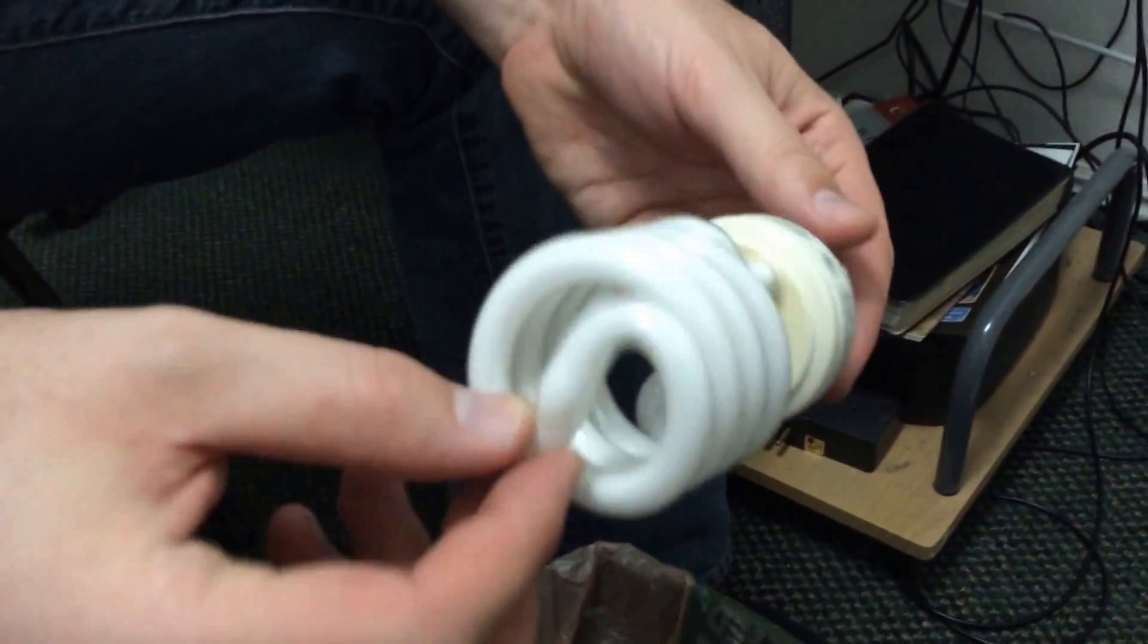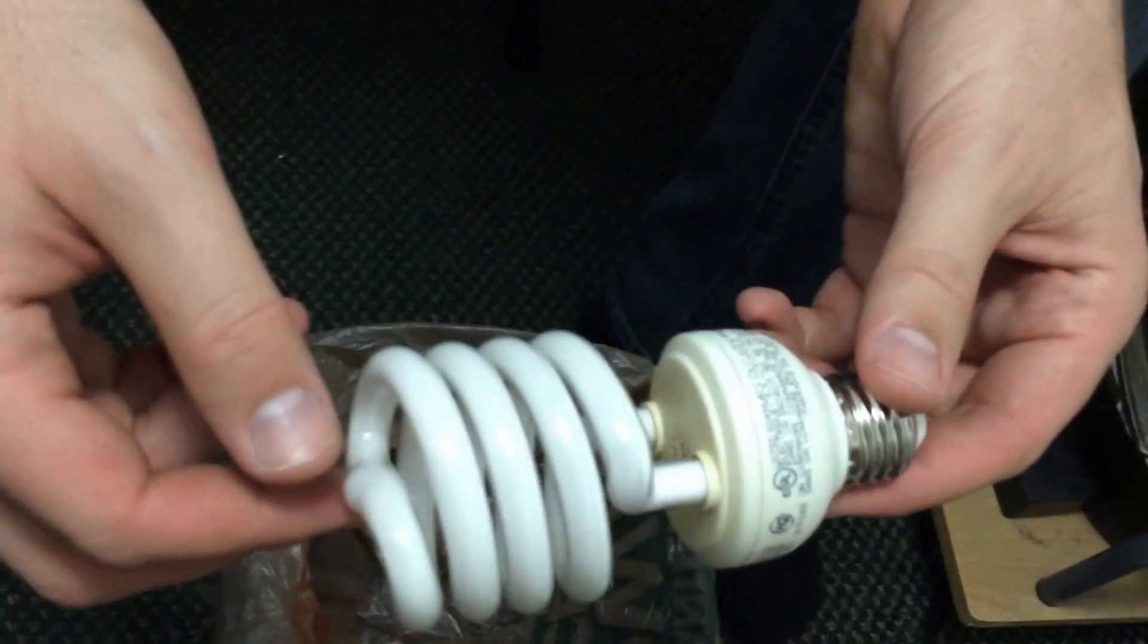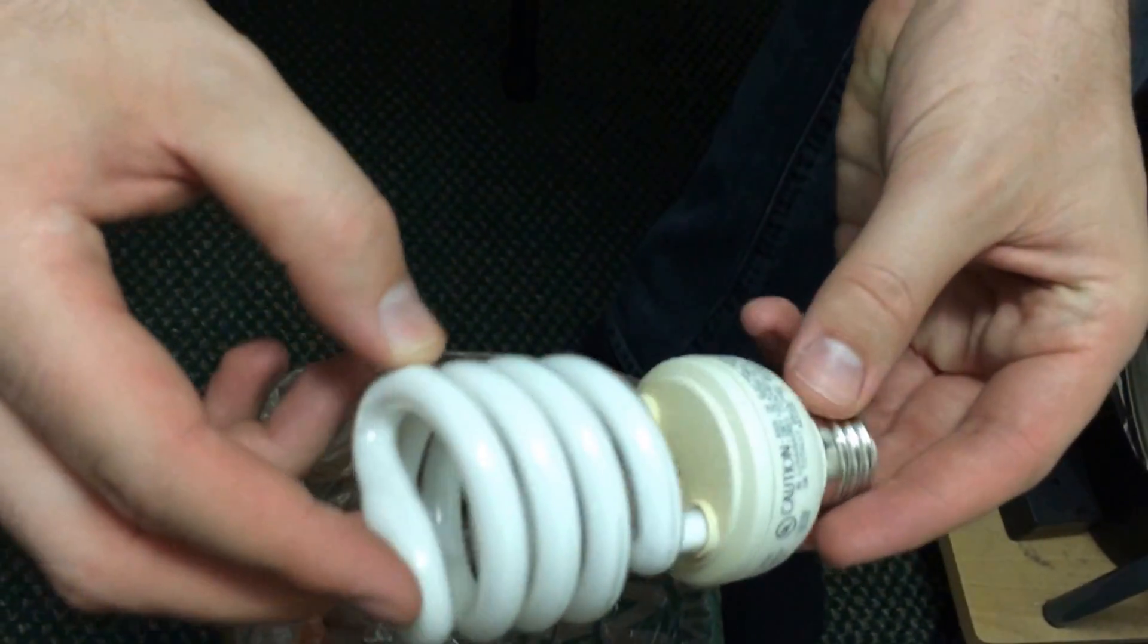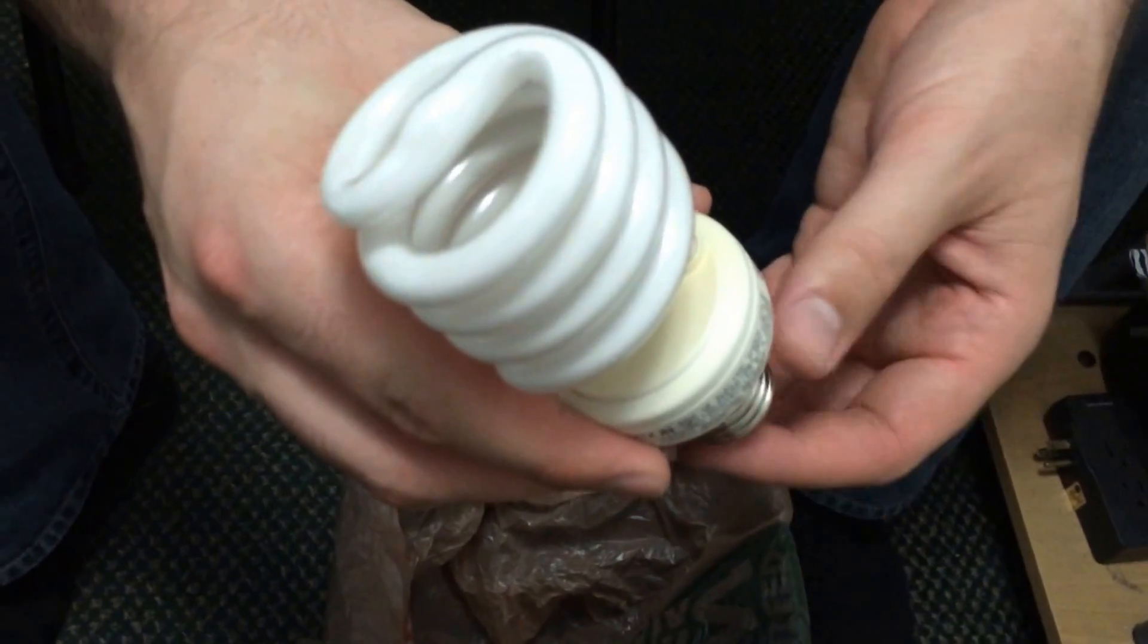Here we have a CFL, or Compact Fluorescent Bulb, and what's interesting about these bulbs is that they say on the box that they'll last for upwards of five years. In fact, a lot of them claim that they'll last for ten.